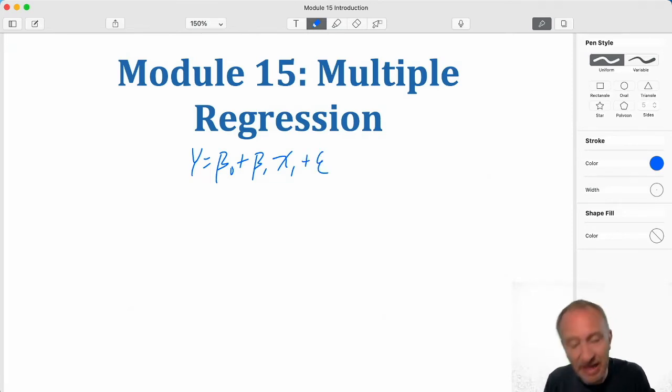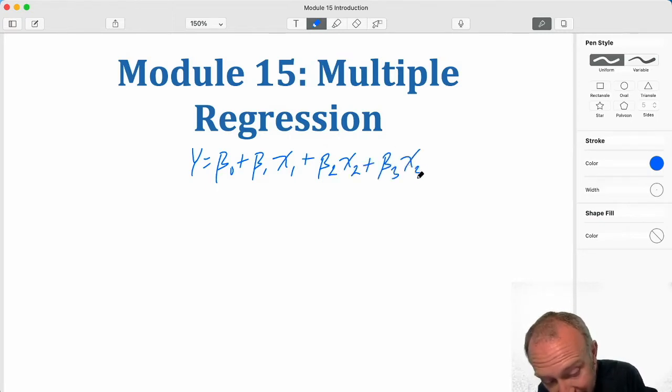Where in module 14 we had a regression equation that had one independent variable that we used to predict or explain the variation in our dependent variable. Now we can allow for as many independent variables as we see fit.